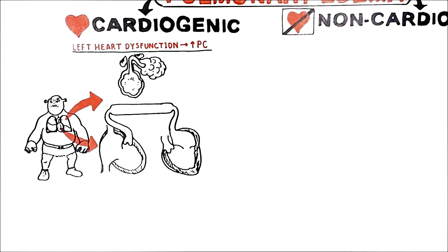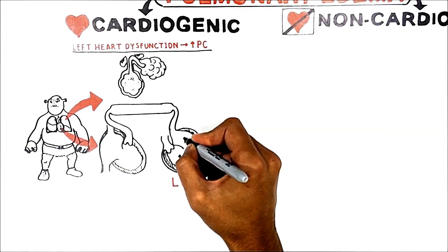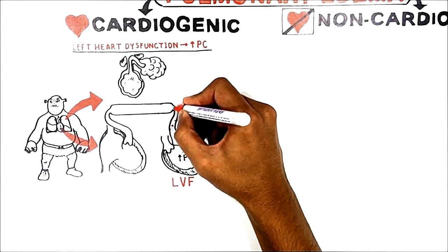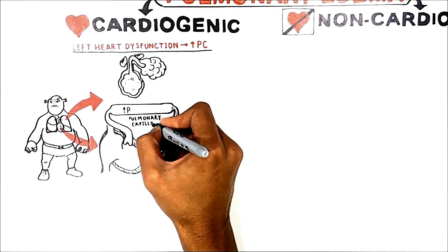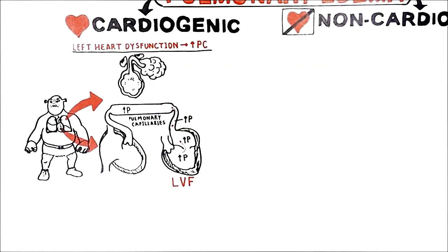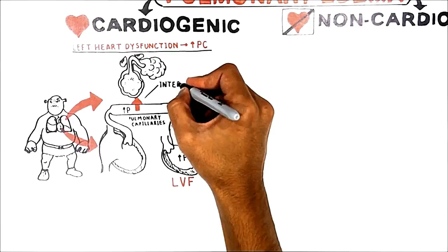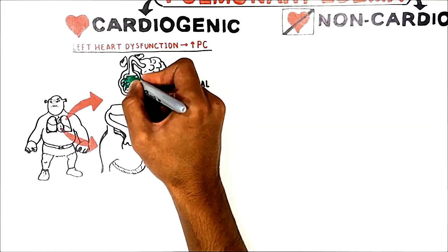When a patient has left ventricular failure, it means that the left ventricle is not able to pump blood to the aorta properly. In this case, the pressure within the left ventricle and left atrium will increase, which in turn increases pressure in the pulmonary veins. Blood backing up will lead to increasing hydrostatic pressure in the pulmonary capillaries. Increased capillary hydrostatic pressure pushes fluid out of the capillaries — first into the interstitial space, then into the alveoli — and alveolar pulmonary edema develops.